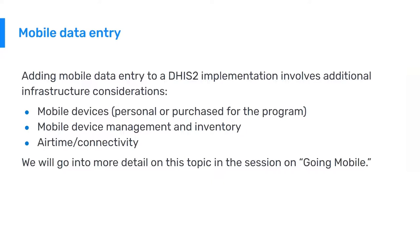For mobile data entry, adding mobile data entry to a DHIS2 implementation involves additional infrastructure considerations addressed in more detail in the going mobile session. Typical questions include: which mobile devices should be purchased, can personal devices be used on the job or are they specifically purchased for the program, how do you keep track of all devices and maintain an inventory of what needs to be replaced, and think through airtime and connectivity for each individual device.